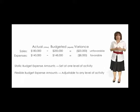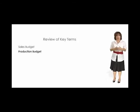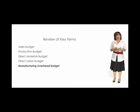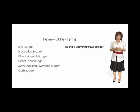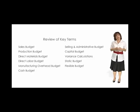This completes our discussion of the budgeting process and performance evaluation. Let's review the key terms and concepts introduced in this module, listed in the order they were introduced: sales budget, production budget, direct materials budget, direct labor budget, manufacturing overhead budget, cash budget, selling and administrative budget, capital budget, variance calculations, static budget, and flexible budget. If there are any of these terms or concepts you are unable to describe, return to the module for review. This concludes our budgeting and performance evaluation module.